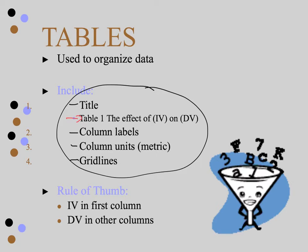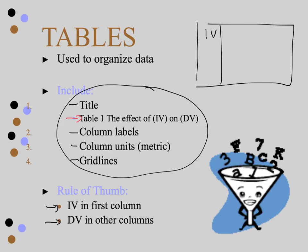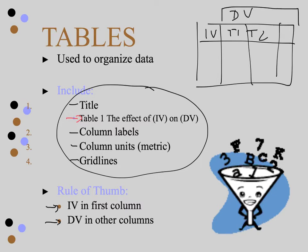The rule of thumb we're going to use this year is that we're going to put the IV in the first column, and then the trials for all of the dependent variables in all of the other columns. So if we were to draw a table, we would have the IV here, and then each of the trials going along — trial one, trial two, et cetera — and then a header row for the DV with units. Please excuse the handwriting.